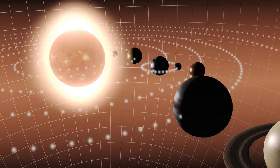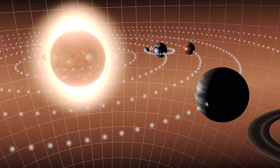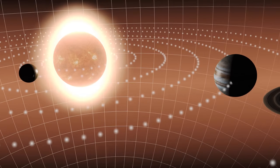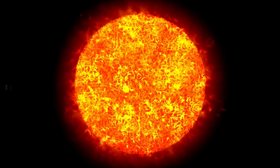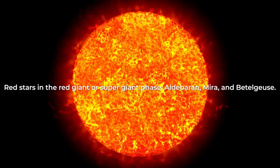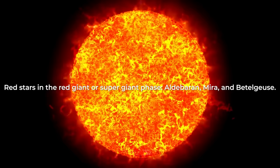So we learned a lot about the future of the solar system if the sun was a red star. Now before getting to know what would happen if the sun was blue, let me give you some examples of well-known red stars in the red giant or supergiant phase: Aldebaran, Mira, and Betelgeuse.